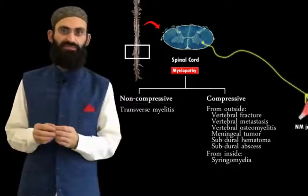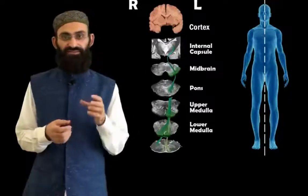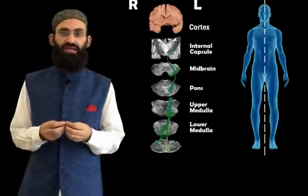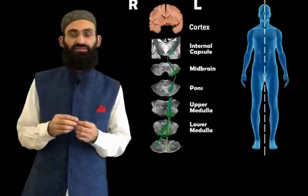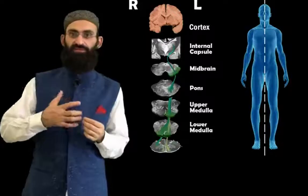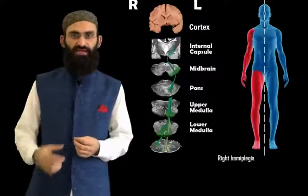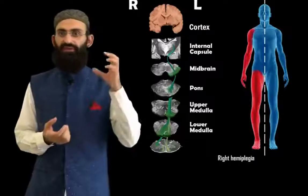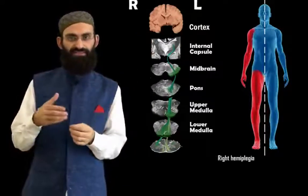Now we will take examples of hemiplegia and try to localize the lesion. Hemiplegia results from unilateral damage to the corticospinal tract, and this damage can be at the level of the brainstem, internal capsule, or cerebral cortex. Since the corticospinal tract crosses the midline at the level of the lower medulla, damage to the corticospinal tract in the brainstem, internal capsule, or cerebral cortex will result in hemiplegia on the contralateral side. For example, a person with right-sided hemiplegia will have a lesion at the level of the left brainstem, left internal capsule, or left cerebral cortex.